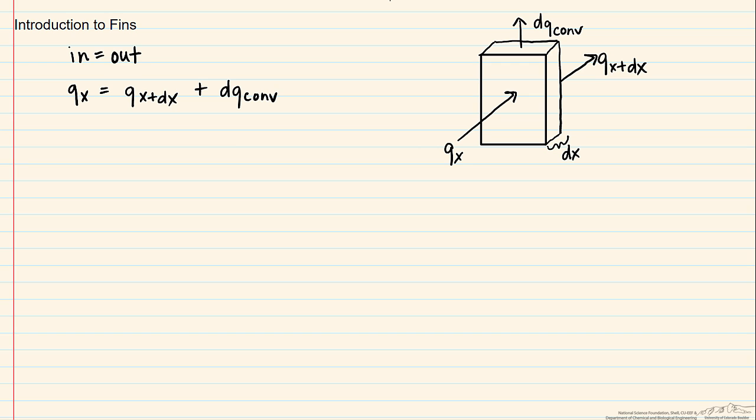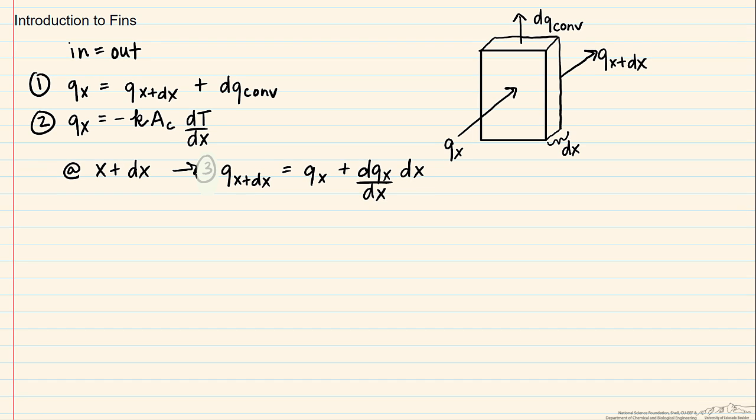According to Fourier's law, q of x is equal to minus k times the cross sectional area which it's going through, dt dx. We assume in using Fourier's law this way that k is constant. Now we look at x plus dx. Our q at x plus dx is equal to our q at x plus dqx dx times our differential x. So we'll call this equation 1, call this equation 2, and this equation 3.